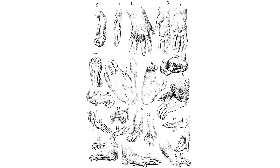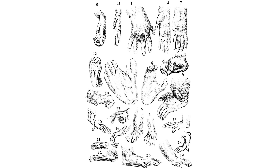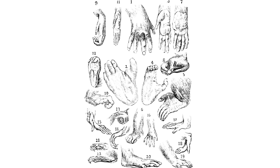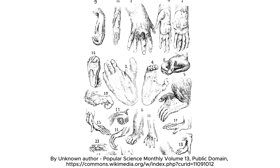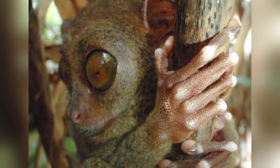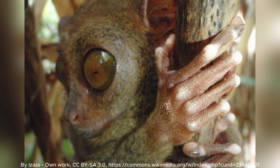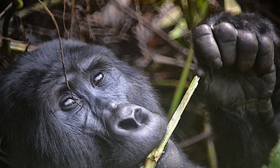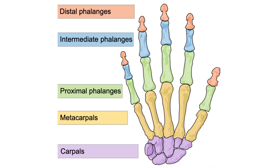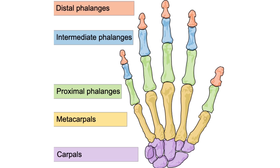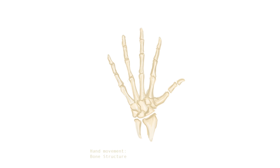In the evolutionary lineage leading to primates and humans, five fingers remained a crucial trait. Primates adapted their limbs for grasping and climbing, developing an opposable thumb which made their hands even more versatile. This opposable thumb, along with five fingers, gave primates and eventually early humans the ability to manipulate objects and tools — an essential skill for survival. Early humans could use their hands for crafting tools, using weapons, and developing fine motor skills like throwing and gripping.